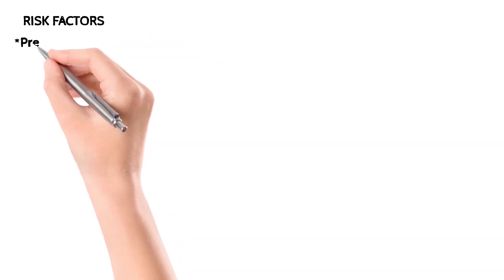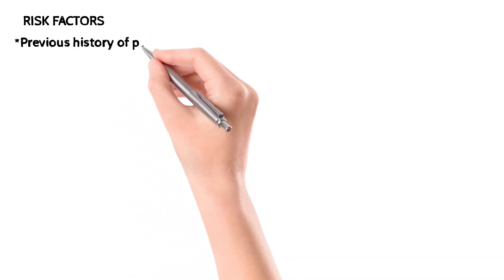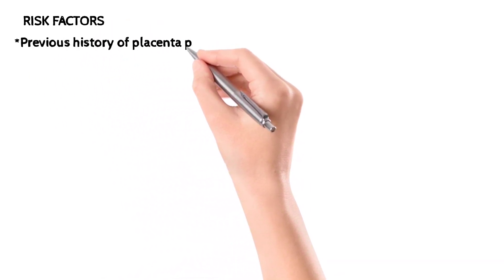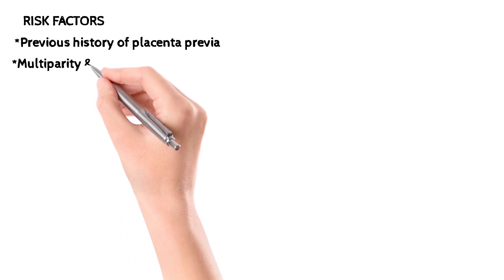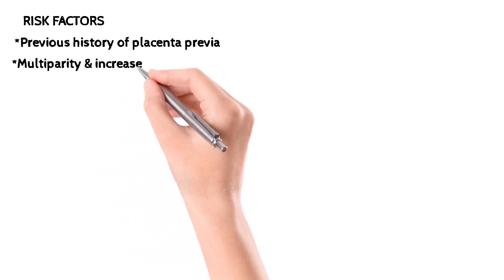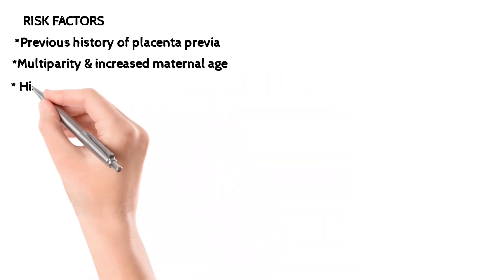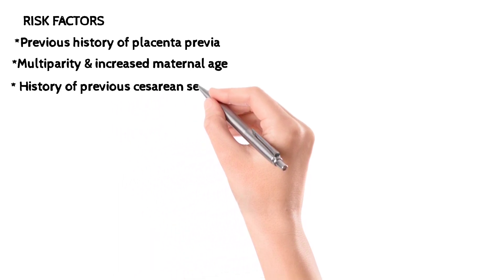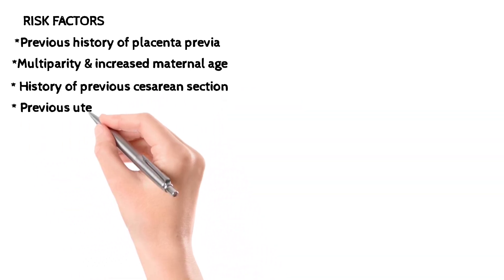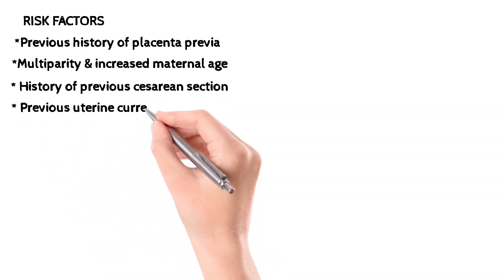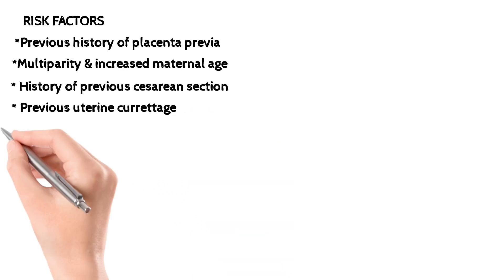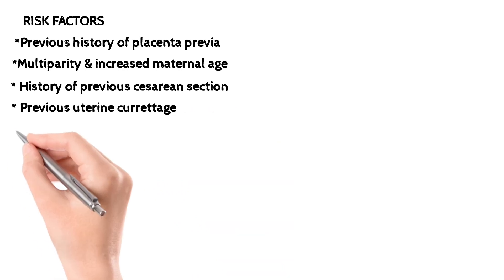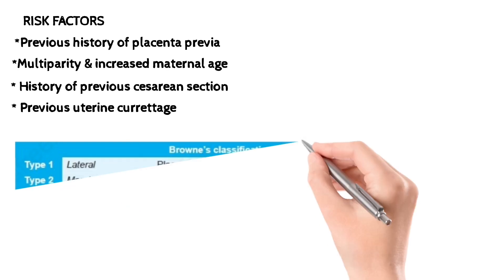Now let's look at the risk factors responsible for causing placenta previa. These include a previous history of placenta previa, maternal age greater than 35 years, a history of previous cesarean section, and uterine curettage. These are the main risk factors.